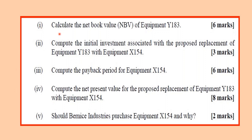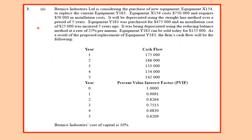Part one requires us to calculate the net book value of equipment. Part B: compute the initial investment associated with the proposed replacement of Equipment Y-183 and Equipment X-184. Then compute the payback period, compute the net present value for the purpose of replacement of equipment, and determine whether Bernice Industries should purchase the equipment and why. Let's read through the question now.